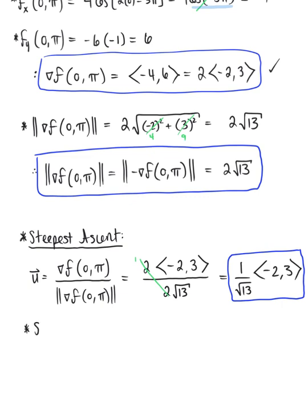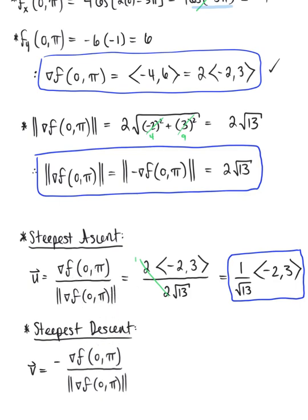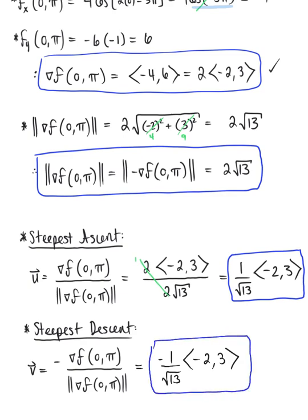To find the unit vector pointing in the direction of steepest descent, all we need to do is add a negative. So vector v, the unit vector pointing in the direction of steepest descent, is negative 1 over the square root of 13, multiplied by the vector with components negative 2 and 3. These are our two final answers for part A.